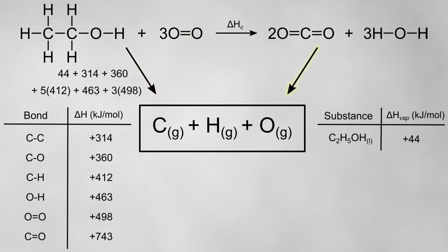On this arrow, I'll put the relevant bond enthalpies for the products. If we look at the bonds in our product molecules, there are two C=O double bonds in a molecule of carbon dioxide, but there are 2 moles of carbon dioxide, so that's a total of 4 moles of C=O double bonds. Each water molecule contains 2 O-H bonds, and there are 3 moles of water, so that's a total of 6 moles of O-H bonds.